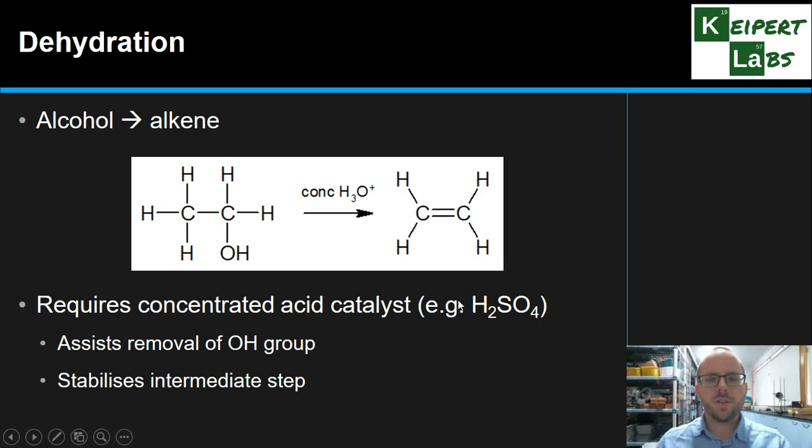Now, the reason that we have that concentrated acid catalyst is that it helps to allow this OH group to be removed. We're not going to go into the nitty-gritty of exactly how that comes off, but essentially the use of the acid means that there's an intermediate step when this OH group leaves first, and then before this hydrogen leaves, that it helps to make that more stable. And it facilitates that process, that H plus ion, so concentrated acid.